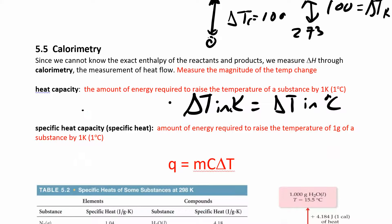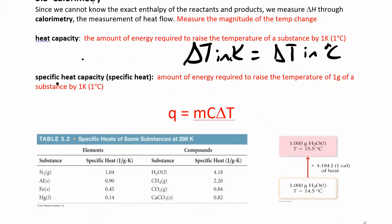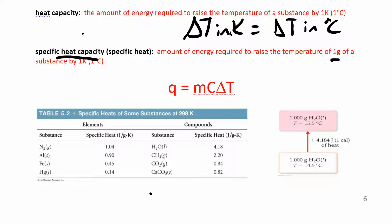Specific heat capacity is a little bit different. You're specifically talking about one gram of your substance. It's the amount of energy required to raise the temperature of one gram of substance by one Kelvin. The units are going to be a little bit different. In this table, you have different specific heat capacities for different substances. It's joules per gram Kelvin. The amount of energy, joules. Gram is the mass and Kelvin is your temperature.